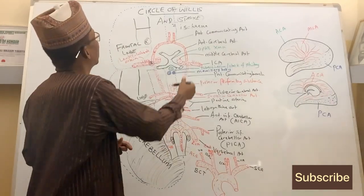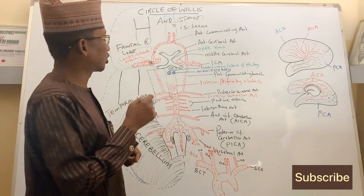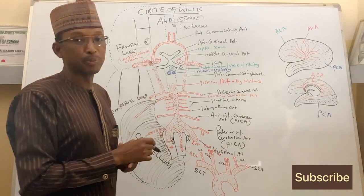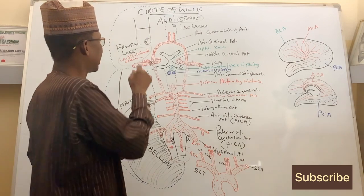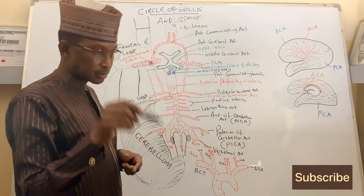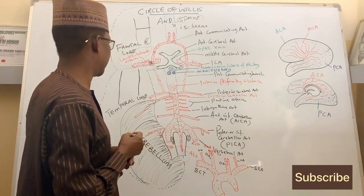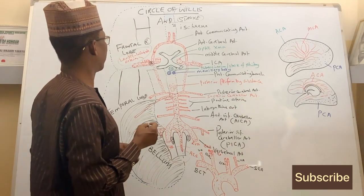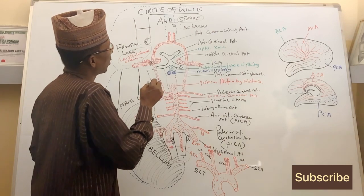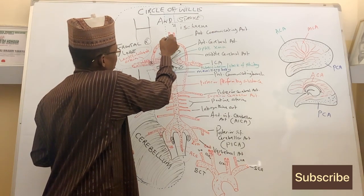Conversely, if the left middle cerebral artery is blocked, the right side of the body will be paralyzed. A right hemiplegia will be accompanied by a motor speech deficit, because Broca's area in the dominant left hemisphere is now affected.